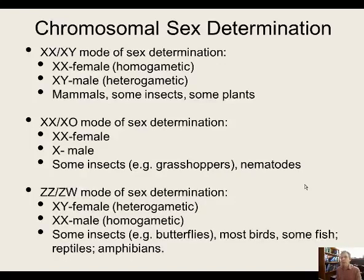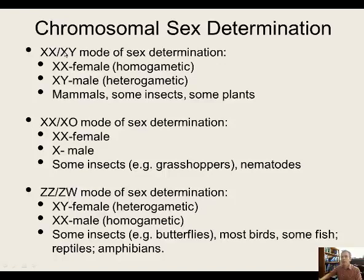Lastly, there is the ZZ/ZW mode of sex determination. It's really just a variation of what mammals have, but flipped around. Females are the heterogametic sex — ZW — and males are the homogametic sex — ZZ. It was discovered first in butterflies, and is also found in most birds, some fish, reptiles, and amphibians. It goes by the name ZZ/ZW to distinguish it from the XX/XY system; they just use the next letters in the alphabet.